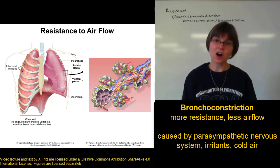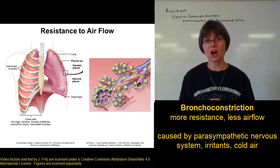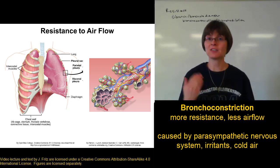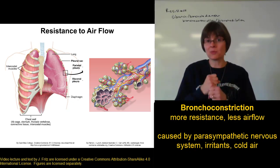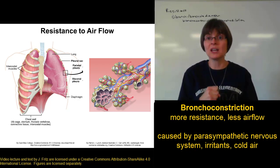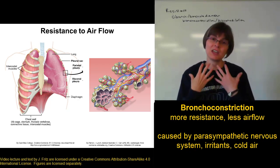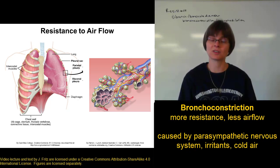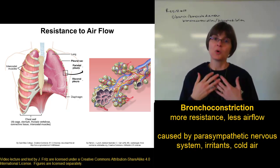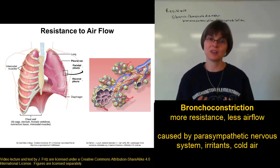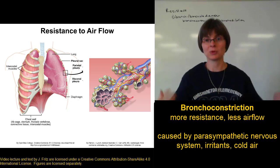Irritants also cause constriction of the airways. Along with causing faster or slower breathing, irritants trigger bronchoconstriction to keep them from being pulled too deeply into the lungs. This increases resistance and reduces air flow so that irritants aren't pulled further in.